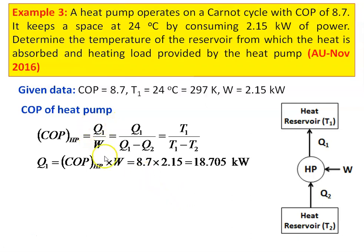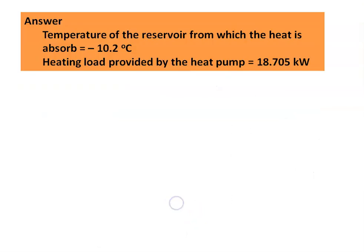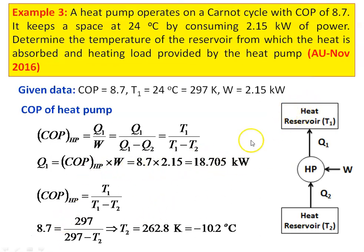COP of the heat pump is defined as Q1 by W, equal to Q1 by (Q1 minus Q2), which is also equal to T1 by (T1 minus T2). Q1 equal to COP into W equal to 8.7 into 2.15 equal to 18.705 kilowatts. The COP is also equal to T1 by (T1 minus T2), so 8.7 equal to 297 divided by (297 minus T2). Solving this equation, T2, the temperature of the cold reservoir, is 262 Kelvin, which is minus 10.2 degree Celsius. The temperature of the reservoir from which heat is absorbed is minus 10.2 degree Celsius, and the heating load provided by the heat pump is 18.705 kilowatts.